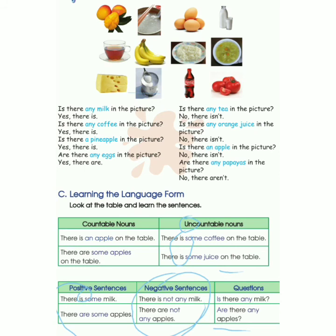Untuk contoh kedua: Are there any apples? Kenapa pakai are? Karena apple ini masuk countable noun, jadi bisa pakai are. Kecuali uncountable — semua pakai is. Miss akan kasih juga sedikit catatan untuk kamu. Selamat menikmati. Thank you.